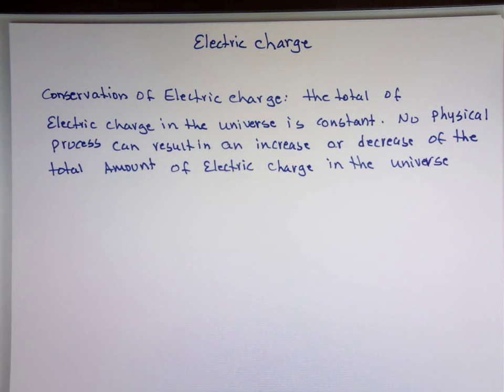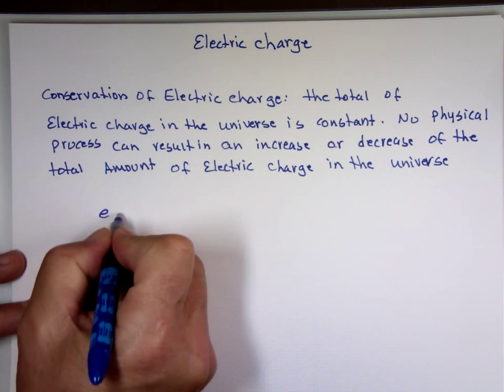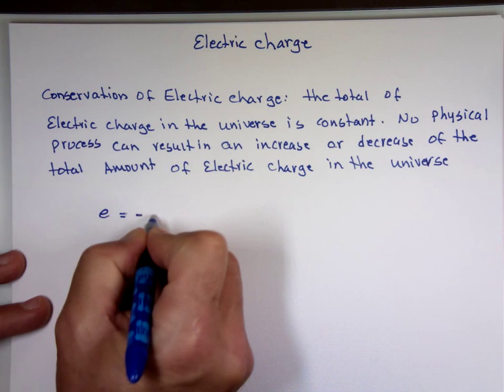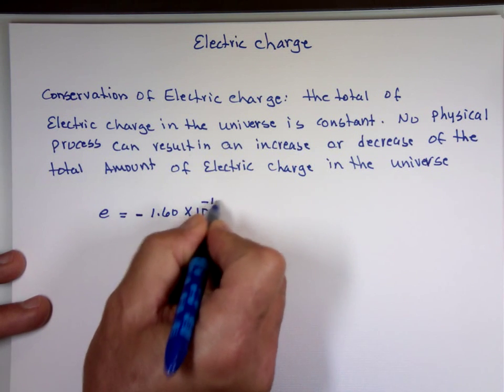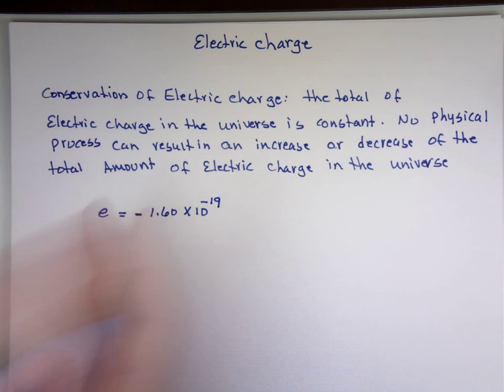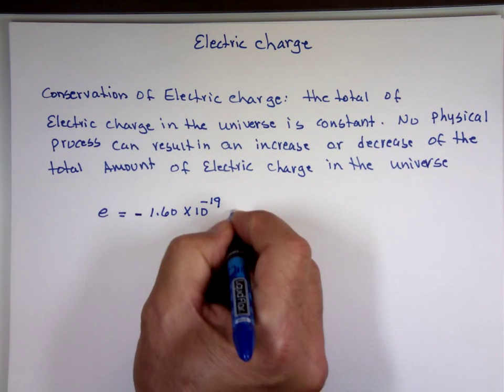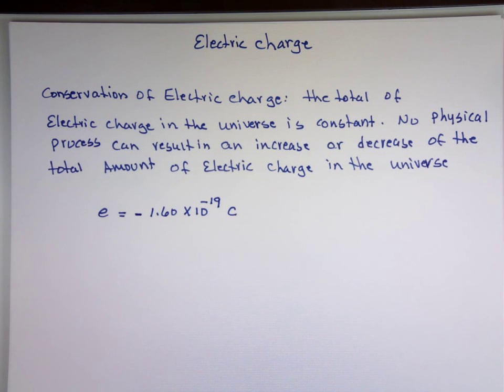Each electron has a charge of roughly negative 1.60 times 10 to the negative 19. And the unit for charges is Coulomb. We use C for Coulomb. We'll talk about that shortly.